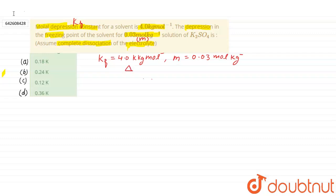What we have to find? Delta Tf, which is depression in freezing point.